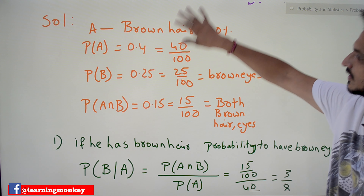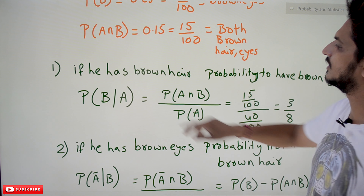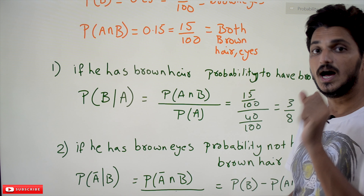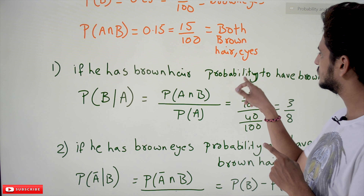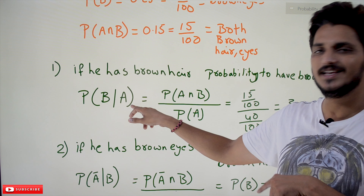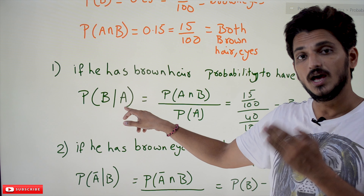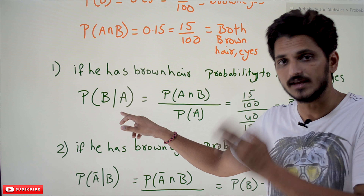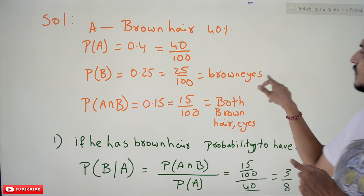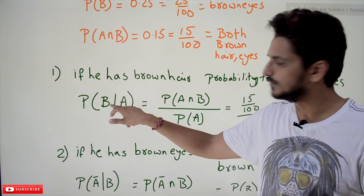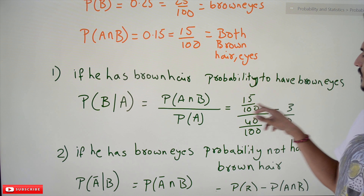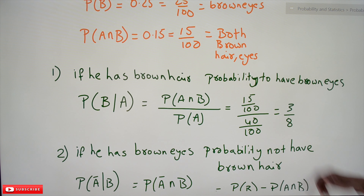For the first question: a person is randomly selected from the town and has brown hair. What is the probability he also has brown eyes? We want P(B|A). Using conditional probability, P(B|A) = P(A ∩ B) / P(A) = (15/100) / (40/100) = 3/8. This is our answer.